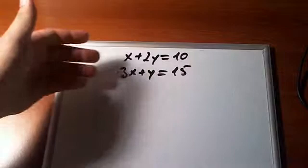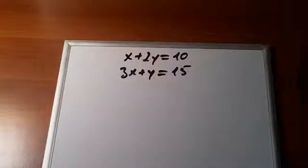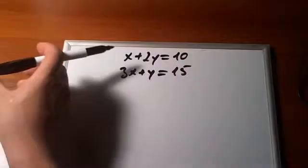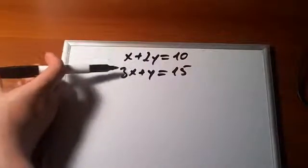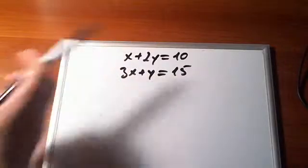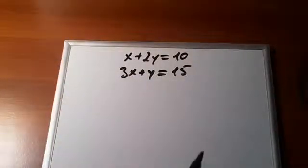3x plus y is equal to 15. It's a little bit more complicated, but it's pretty much the same idea. Now, if we just add them and subtract them, we'll end up again with an equation with two unknowns. Because if we add them, we'll have 4x plus 3y is equal to 25. If we subtract them, again, we'll not get rid of anything.